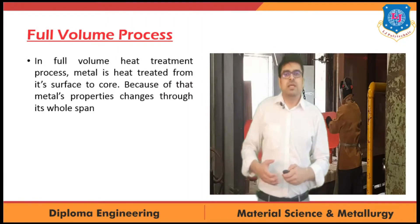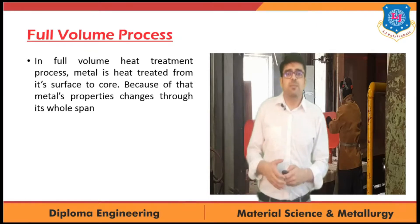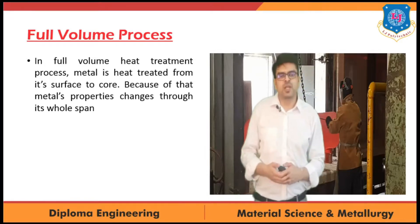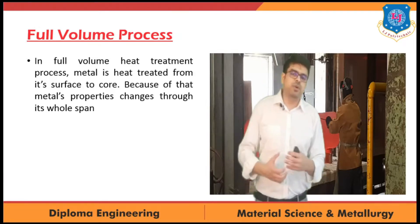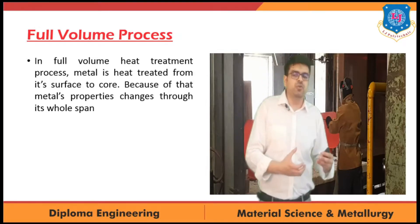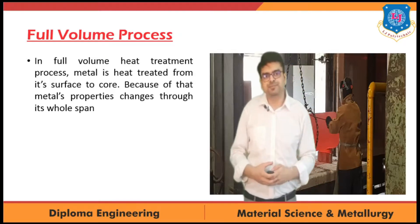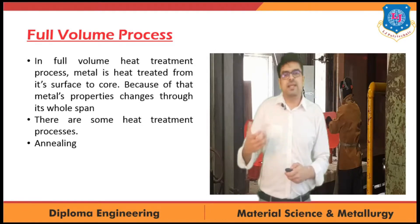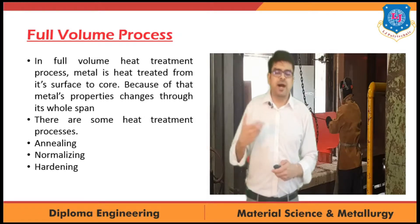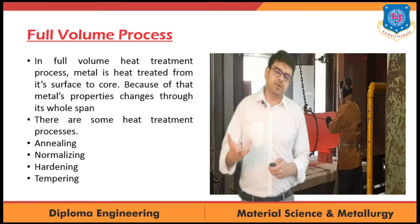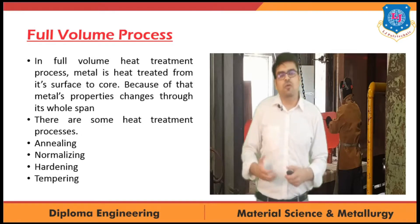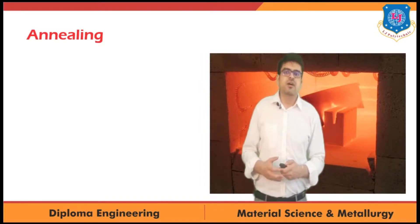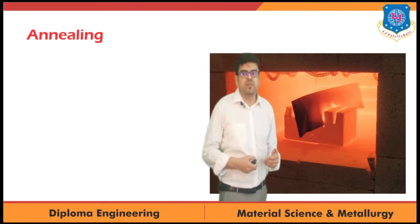In full volume heat treatment process, metal is heat treated from its surface to its internal core. Because of this, the metal's properties will change through its whole region. There are some heat treatment processes such as annealing, normalizing, hardening, and tempering, which are known as full volume heat treatment processes.